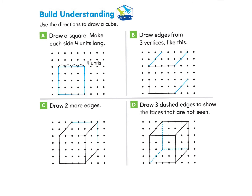Now let's look at part B: Draw edges from three vertices. Here we have a vertex, a vertex, and a vertex — those are the corners. Now we're going to draw edges from those corners, going across two dots on each side — one, two — and one, two. Go ahead and trace and draw that now.